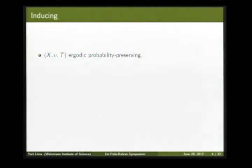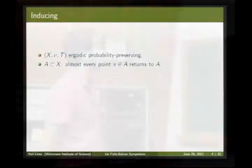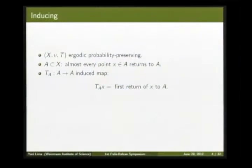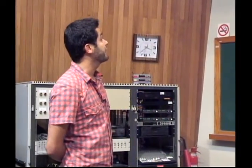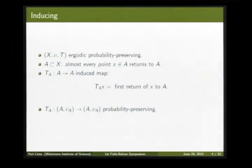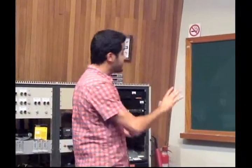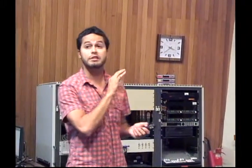We have a measure-preserving transformation which preserves a probability measure, and we assume it is ergodic. Whenever you consider a subset of X, you have Poincaré recurrence — almost every point returns to this set. Because of this, you can define an induced map, which is exactly the position of the first return of a point to A. If you take this measure μ and normalize it, you get again a probability measure-preserving system. This is what I call inducing.